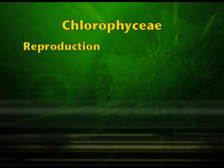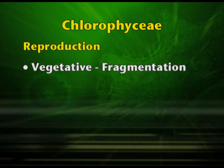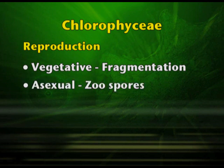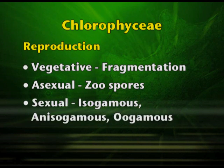Reproduction in Chlorophyceae may be by vegetative means, that is by fragmentation. By asexual means it may be by zoospores. Sexual reproduction may be isogamous, anisogamous, or oogamous.